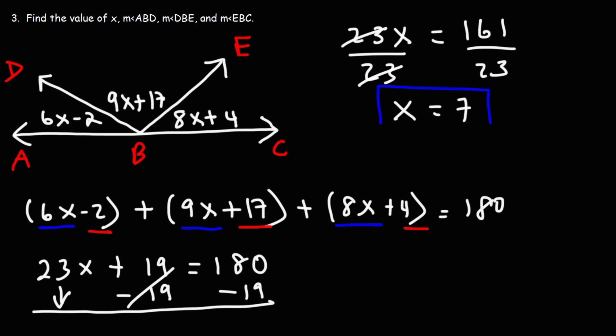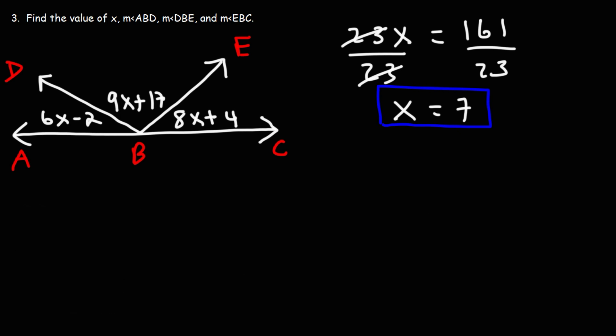So now we know the value of X. So with that, we can calculate the measures of the other angles. So let's start with angle ABD. So that's 6X minus 2. So 6 times 7 minus 2. 6 times 7 is 42. 42 minus 2 is 40 degrees.